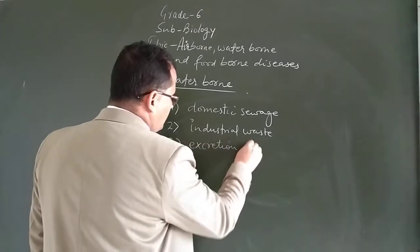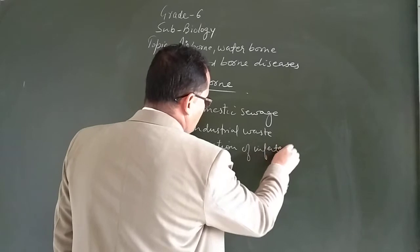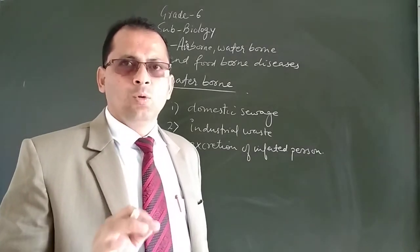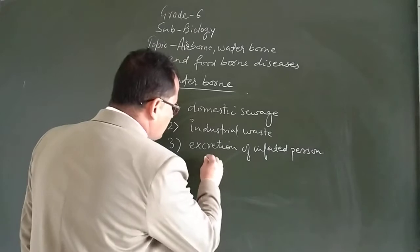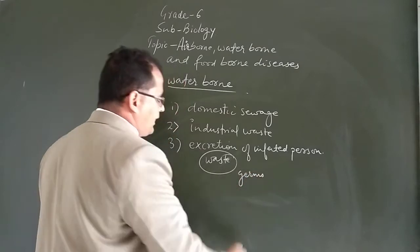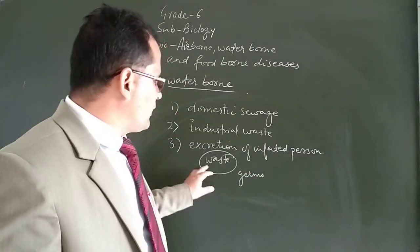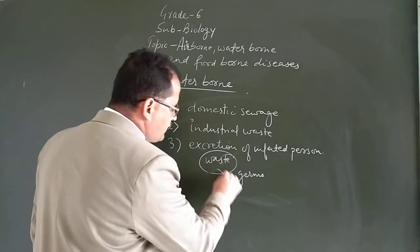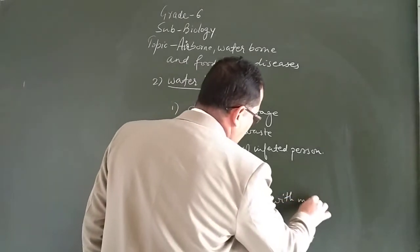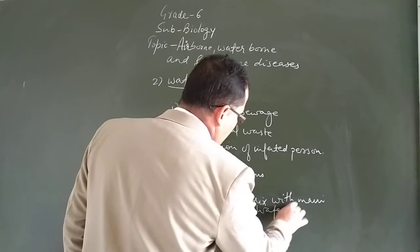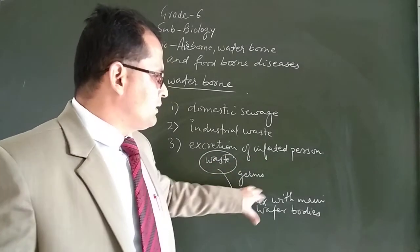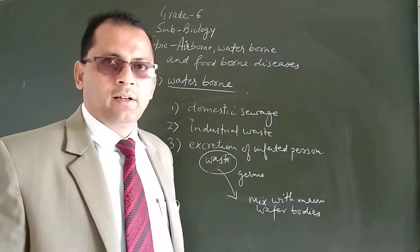Third is excretion of infected person. Now suppose if an infected person defecates in the open area, the waste contains a lot of germs. If rain happens, the rain water will take away all these germs from the waste and that water will mix with main water bodies. The germs from the excreta of the infected person will mix into the water and make the water contaminated.